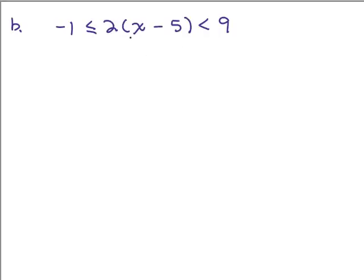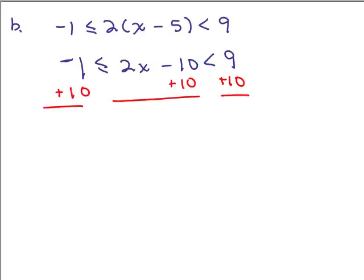So again, we need to solve for x, which is squished in between the negative 1 and the 9. So let's simplify by doing the distributive property first in the middle. So that gives you 2x minus 10. And now, just like the previous problem, we need to get the x by itself. So first, let's add 10 to all 3 parts. So that gives us 9 is less than or equal to 2x is less than 19.